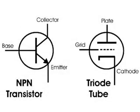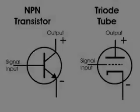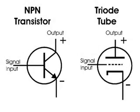Here's a closer look at both the transistor and the triode tube with their parts labeled. Here's another look at the polarity requirement for the NPN transistor and the triode tube. We also have the input labeled and the output labeled.